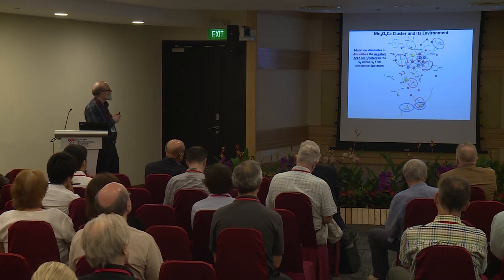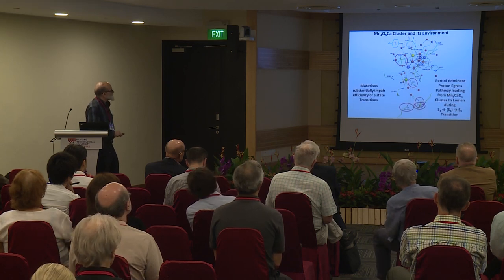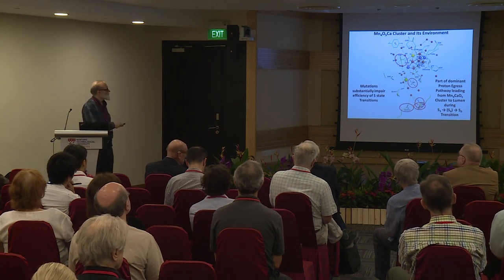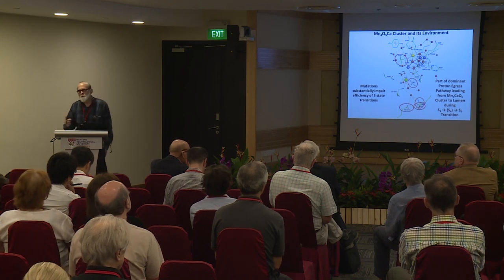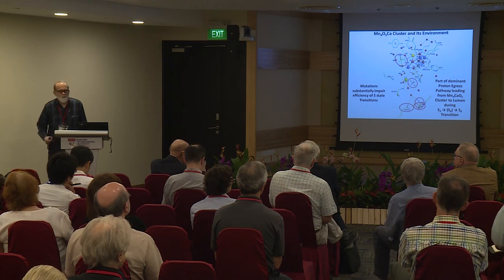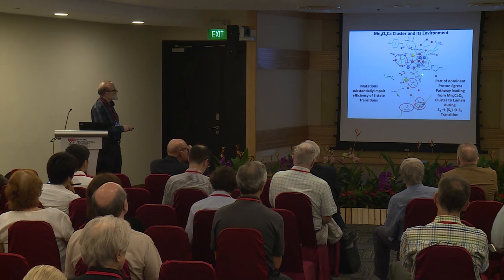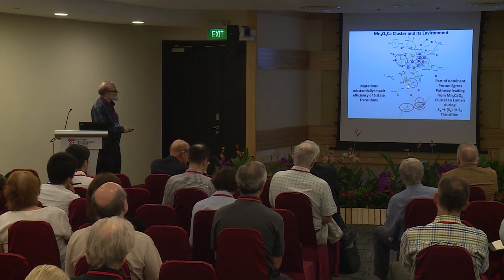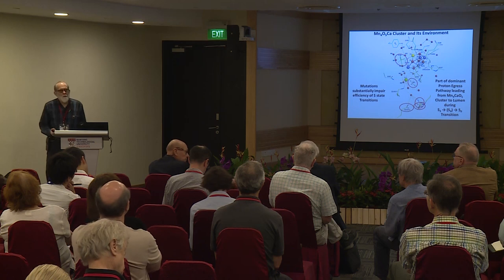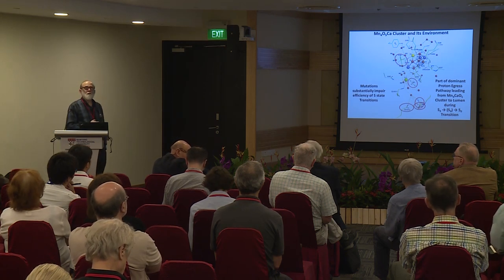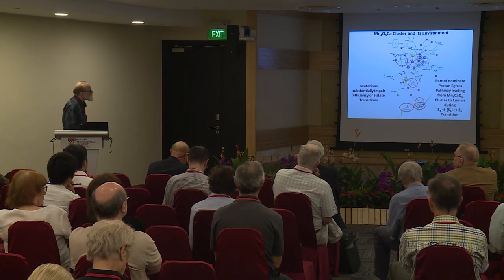In many mutations — particularly D61, or this triad — the efficiency of the S3 to S0 transition is sharply diminished. Like many others, we've argued that there's a dominant proton egress pathway functional during the S3 to S0 transition, where the proton goes via chloride-D61 out this way. One thing we're trying to understand is whether there's a different dominant proton transfer pathway functioning during the S2 to S3 transition. Kumiko Noguchi has proposed that, and I think Holger has proposed that as well.